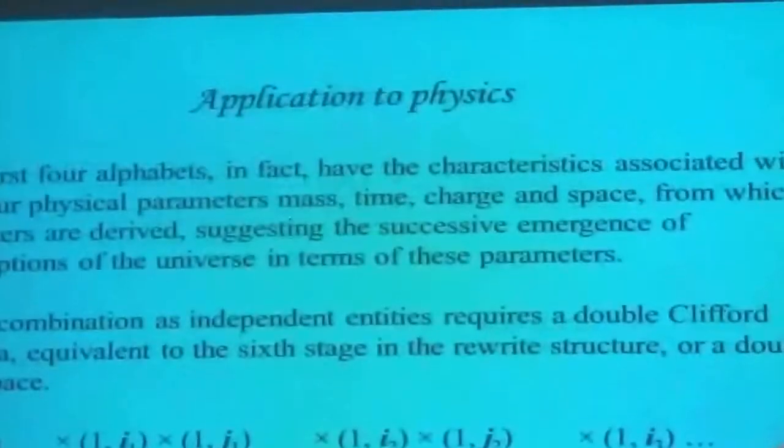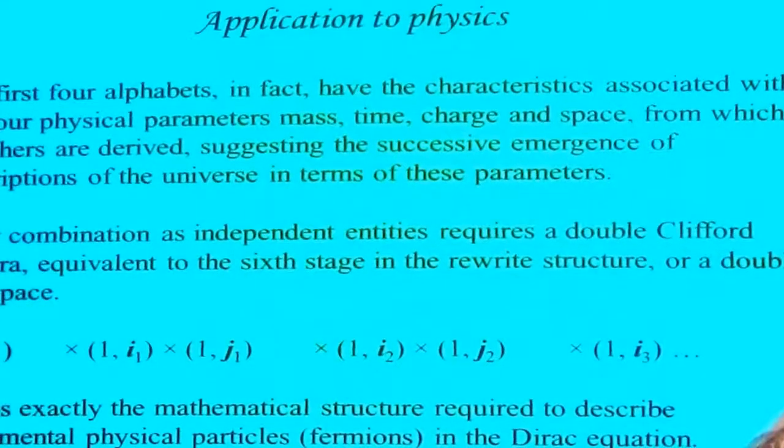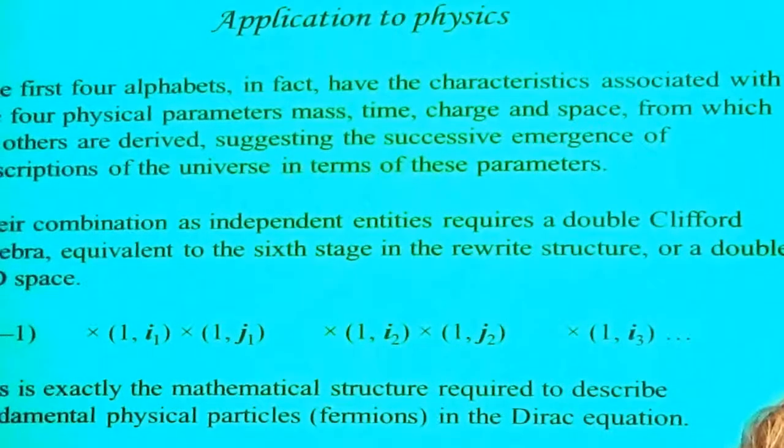This suggests that these are successive pictures of the universe — a mass picture, a time picture, a charge picture, and a space picture. If we combine all their algebras together, we will find that mathematically those four algebras produce what we might call a double Clifford algebra, which is the sixth stage in the rewrite structure — the point of repetition, the point at which you get a repeating cycle. So it's a kind of unit cell of this process.